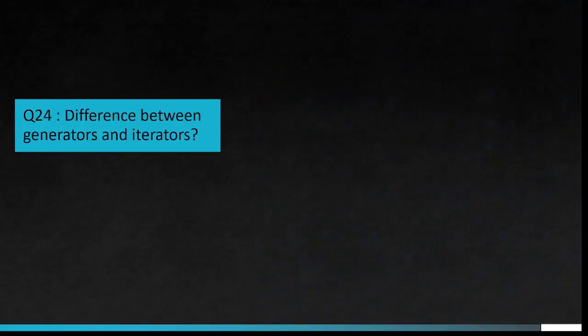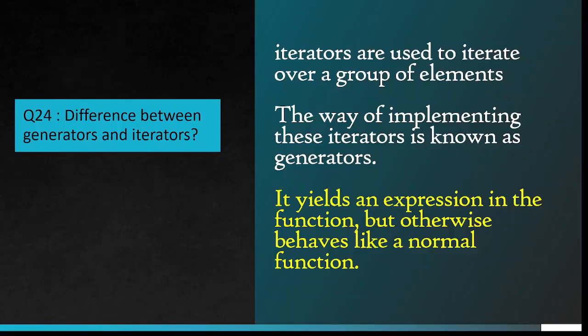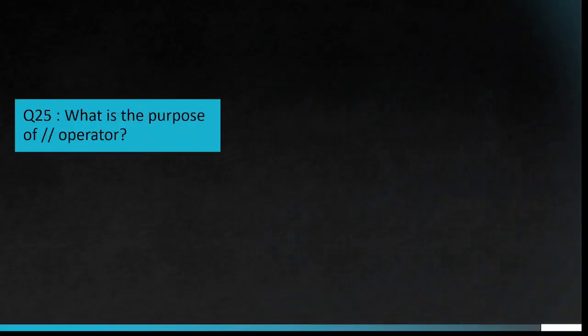Question number 24: Difference between generators and iterators. Iterators are used to iterate over a group of elements. The way of implementing these iterators is known as generators. It yields an expression in the function, but otherwise behaves like a normal function. Question number 25: What is the purpose of slash slash operator?